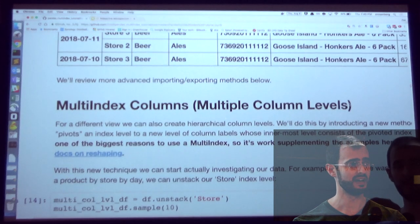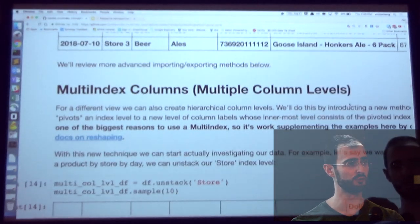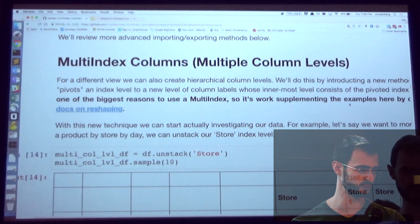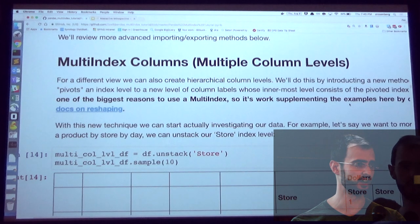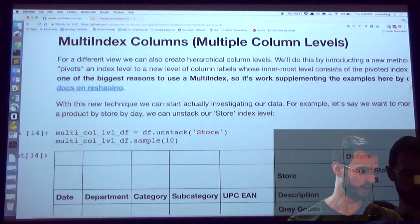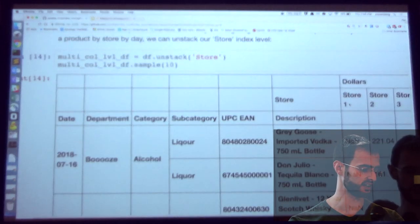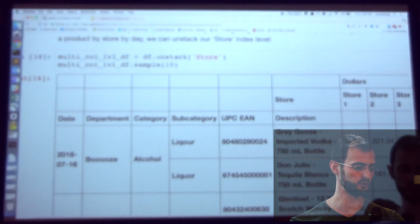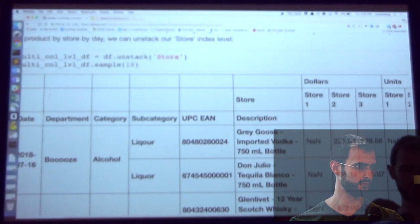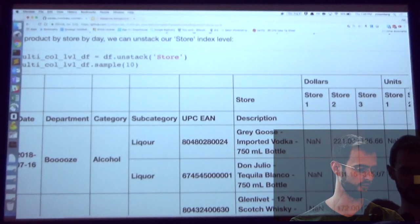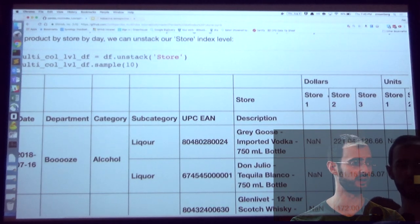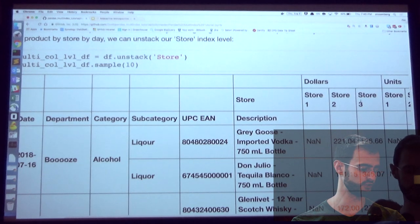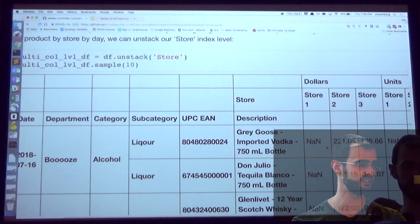All right, so now we have multi-index, but you also can have multiple columns. And this introduces one of the most powerful things. If you take nothing else away from this, this is one of the reasons why you use multi-index, is our stack and unstack. And so what unstack allows me to do is take something, one of my index columns, and I can pivot it to a new level of column. So I have my, I had a store, the store before was one of my index levels, and I pivoted it up here. So now I have, I can compare all my stores side by side, which is pretty useful.